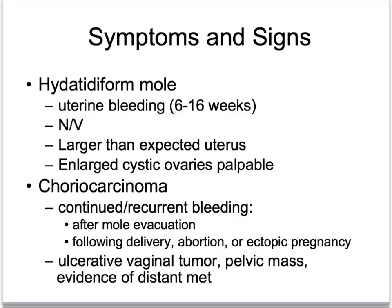Symptoms and signs of hydatidiform mole: the most common symptom is vaginal bleeding, occurring in 80% or greater of patients. Excessive uterine size for gestational age may be present. Theca lutein cysts of the ovaries may be detected by sonography or palpation. Other conditions such as preeclampsia, hyperthyroidism, and hyperemesis gravidarum may occur, but are less commonly seen now as diagnosis tends to be made earlier in the course of gestation. Other symptoms may include a missed or delayed period or passage of aborted vesicular tissue.